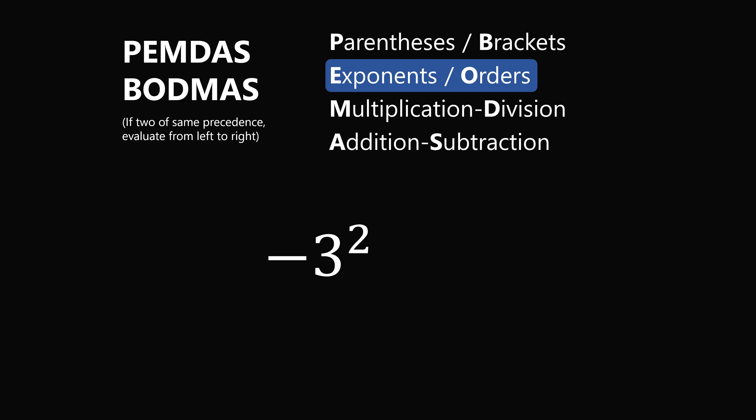Now in this question, the only real thing we have to do is look for the exponent, or order, and calculate that first. So we have 3 squared, and that gets evaluated first to be equal to 9. So substituting that in, this becomes negative 9, and that is the correct answer.